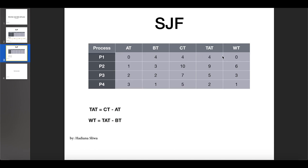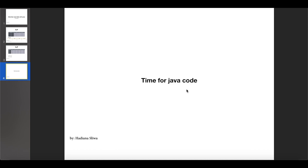Now let's compute turnaround time and waiting time. Turnaround time equals completion time minus arrival time — for P1 that's 4 minus 0 equals 4, and for P2 it's 10 minus 1 equals 9. Waiting time equals turnaround time minus burst time — for P1 that's 4 minus 4 equals zero, and so on. Now let's see the code.